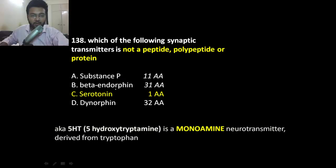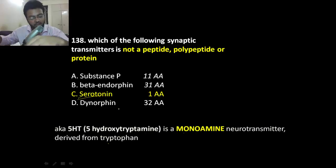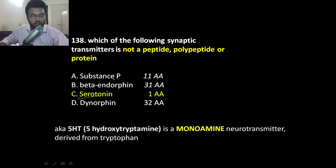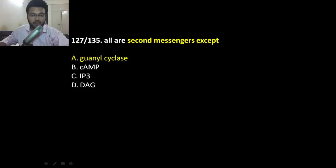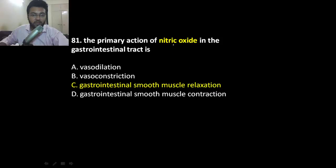MCQ review: All of the following are transmitted along the extracellular fluid except gap junctions, since gap junctions bypass extracellular fluid. Which of the following is not a peptide? Serotonin — it is a monoamine derived from tryptophan with only one amino acid, whereas peptides are chains of long amino acids. Regarding second messengers: cyclic GMP is a second messenger, but guanylyl cyclase is not — guanylyl cyclase is an enzyme.